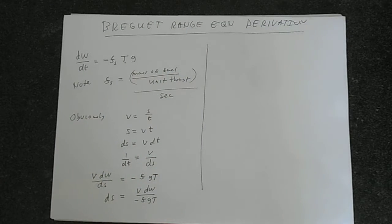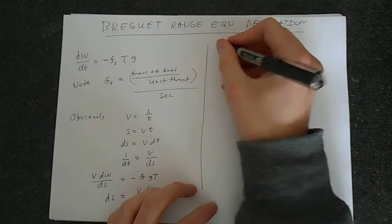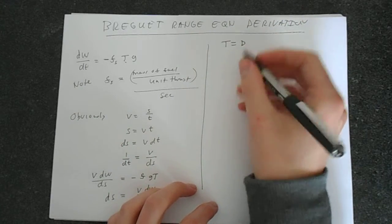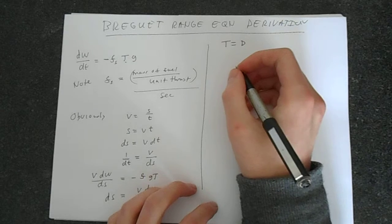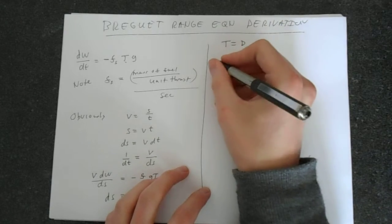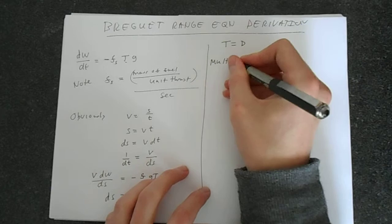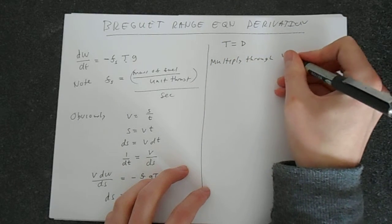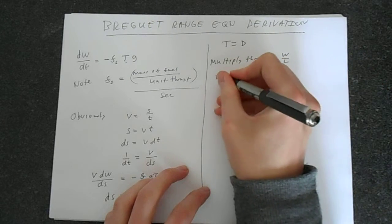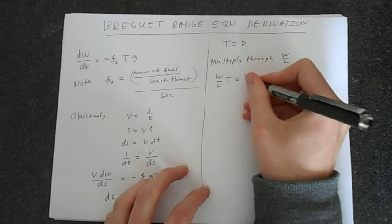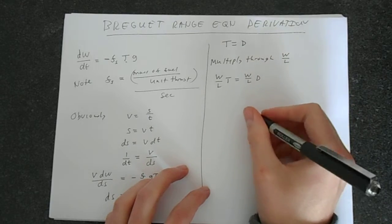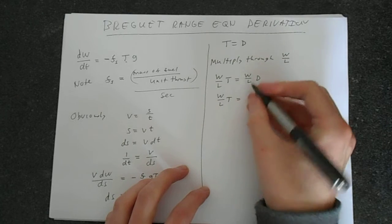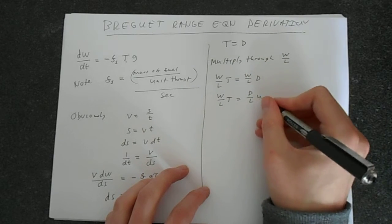Now we can make a useful assumption. We can assume that t equals d, so thrust is equal to the drag. This is a reasonable assumption when we're in steady level flight. Now watch what happens if we multiply through by W over L. So we get W over Lt equals W over Ld. This can be rewritten as W/L times t, moving the d in the W round. So d over L times W.